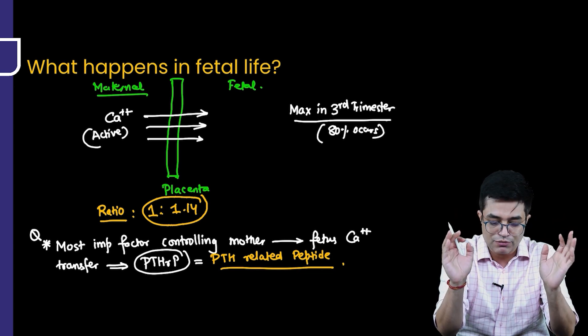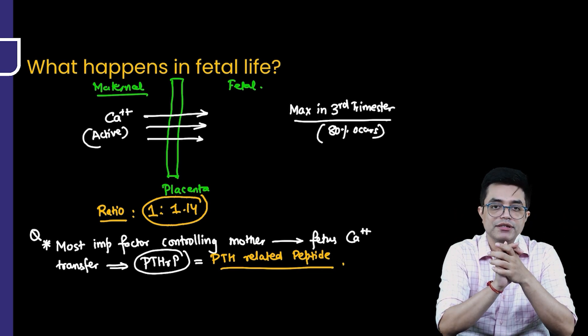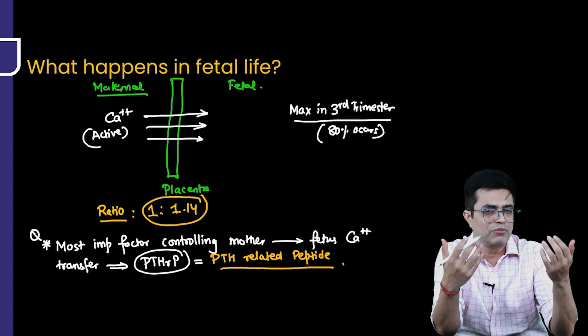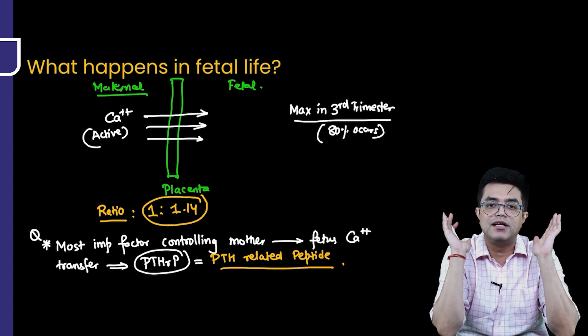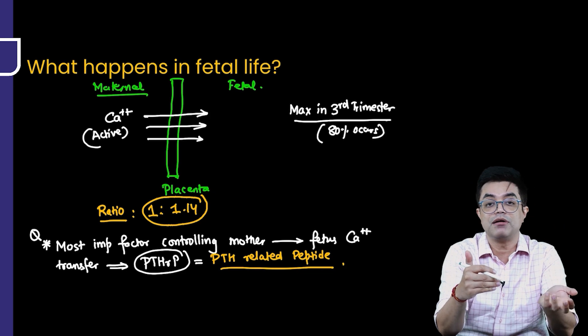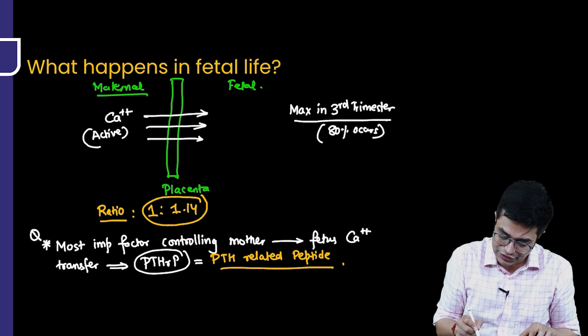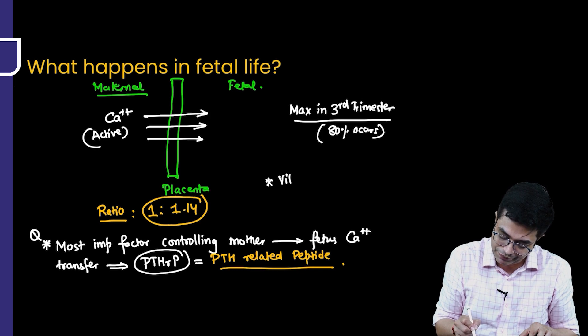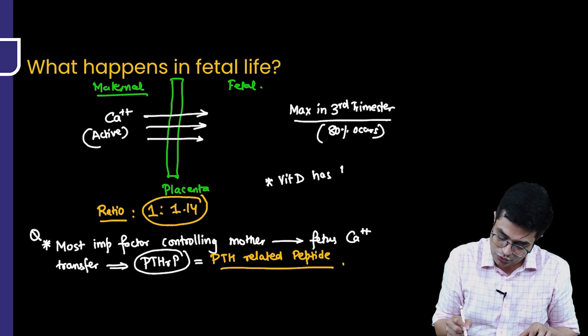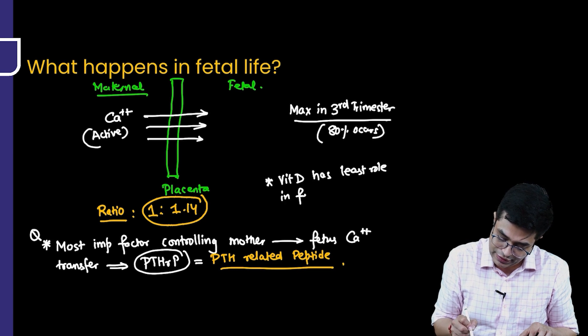Remember mother to child active transport is mostly produced by this and if somebody asks you what is the least important one? Vitamin D plays the least important role. Vitamin D becomes important postnatally. You can remember you can put it somewhere on the side that vitamin D has the least role in fetal calcium transfer.